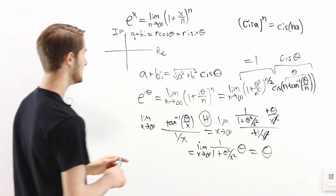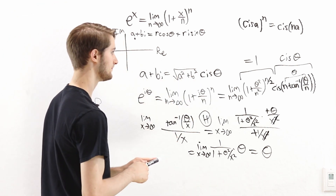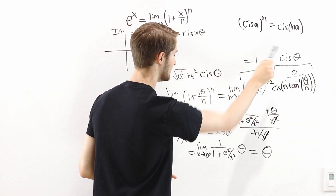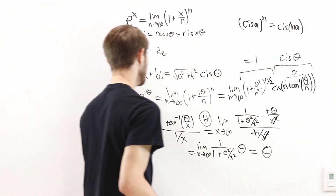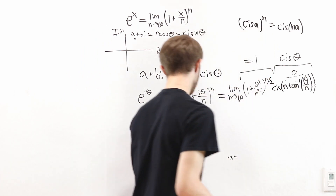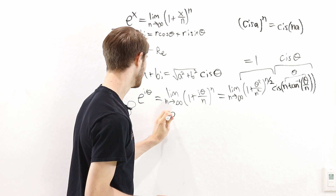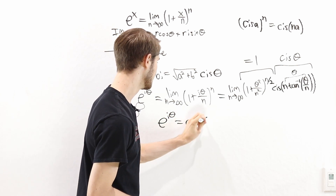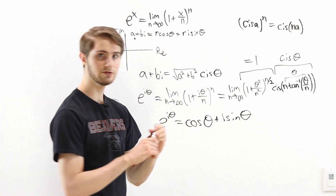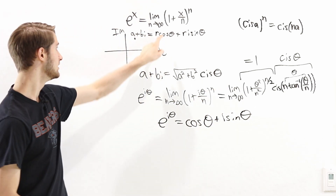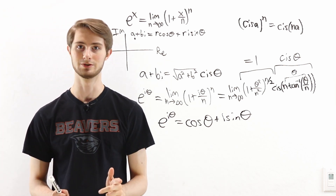Therefore, the limit of 1 plus i theta over n to the power of n equals 1 times cis theta. Going back to our definition of cis theta, we get the final result: e to the i theta equals cosine theta plus i sine theta. So if we define e to the i theta using the limit formula for e to the x, Euler's identity is still true.